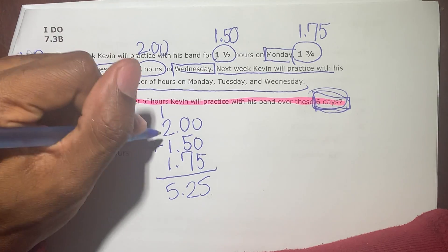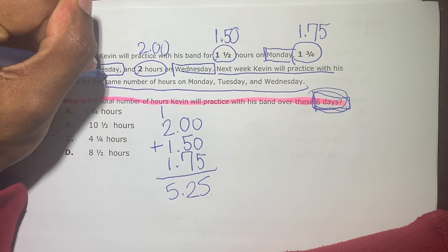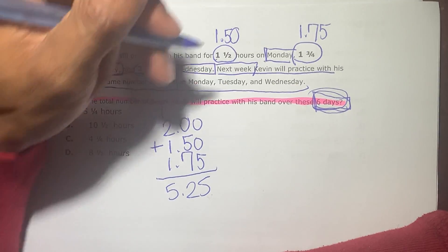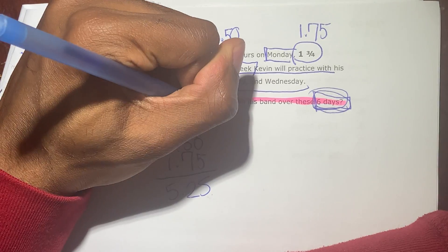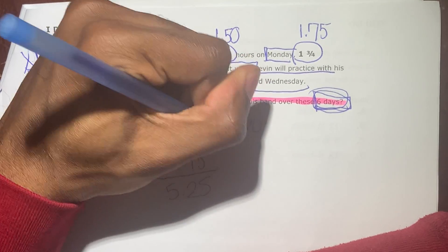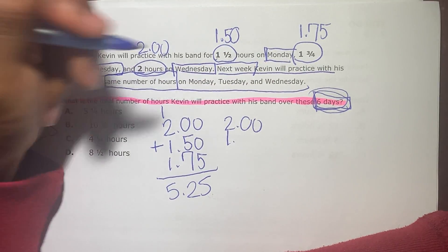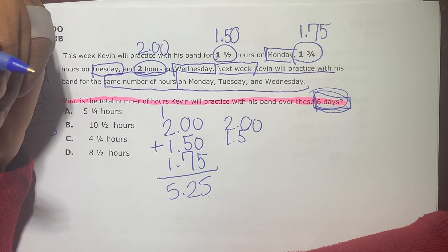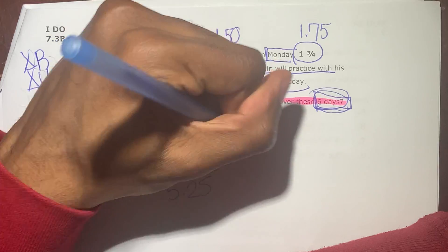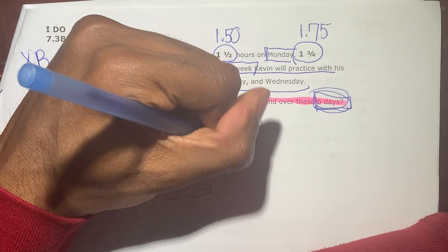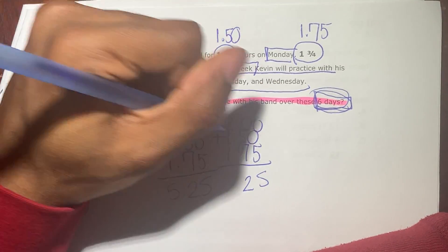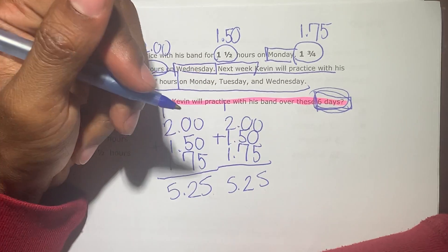Now this is for the first three days, but it says that he practiced the same number of hours on Monday, Tuesday, and Wednesday of the next week. So it's going to be 2 again for the next Monday or the next Wednesday. Then the next Monday is 1.50, and then on the next Tuesday is 1.75. We're going to add these up. We get 5. 5 plus 7 is 12. Carry the 1. 5.25.